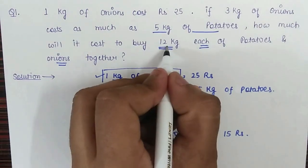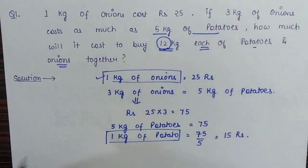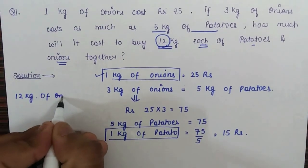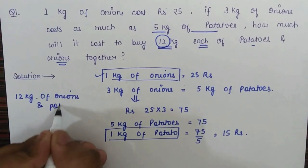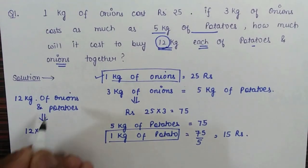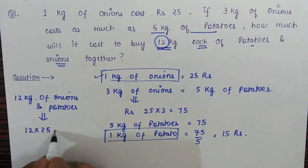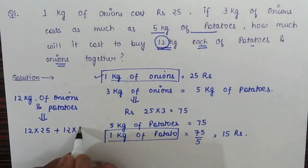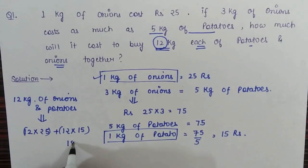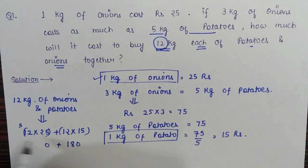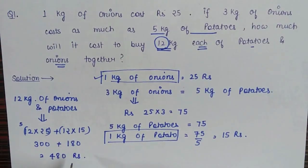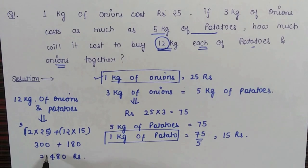We have to calculate the cost of 12 kilograms of potato and onion together. We multiply the unit price: 12 into 25 plus 12 into 15. So 12 into 15 is 180, and 12 into 25 is 300. The total comes to 480 rupees. That is the answer for this question.